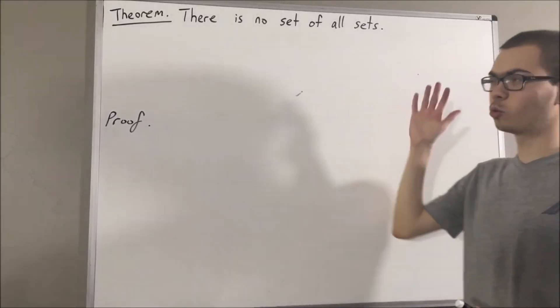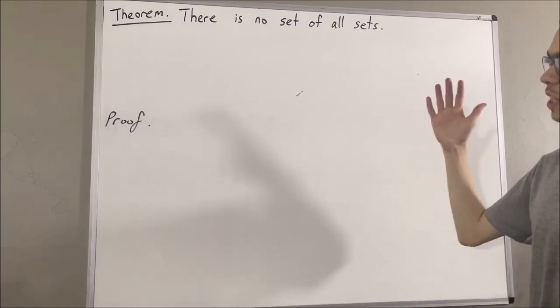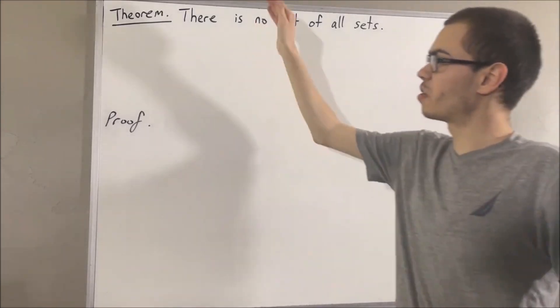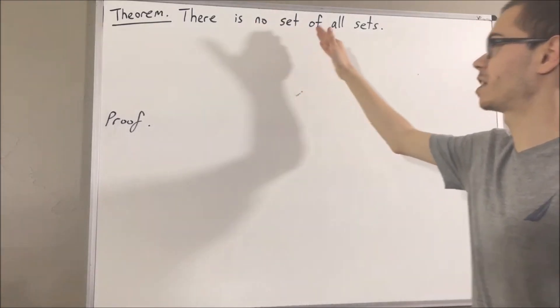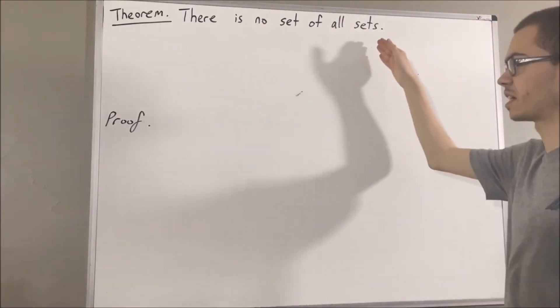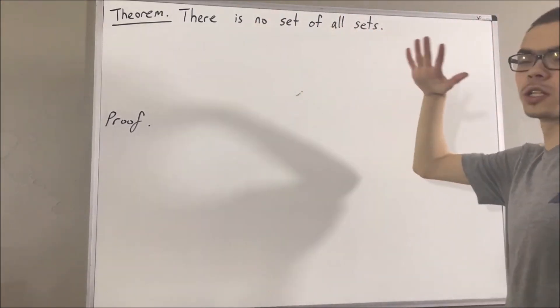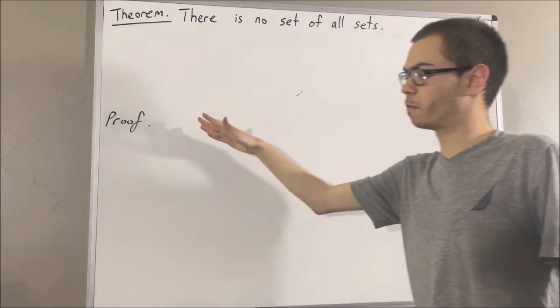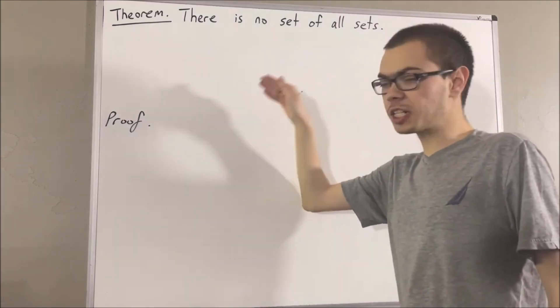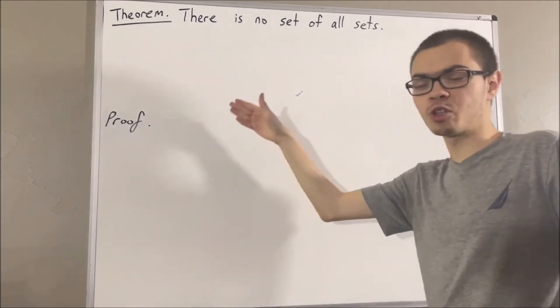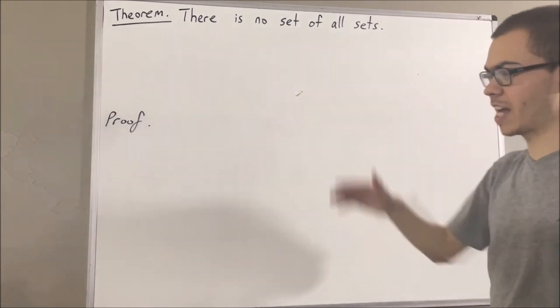In this video, we are going to prove the following theorem: there is no set of all sets. So to start out the proof, let's first consider an arbitrary set A.